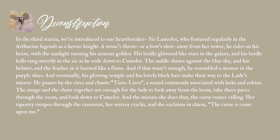In the third stanza, we are introduced to our heartbreaker, Sir Lancelot, who features regularly in the Arthurian legends as a heroic knight. A stone's throw or a bow shot away from her tower, he rides on his horse with the sunlight turning his armour golden. His bridle glittered like stars in the galaxy and his bridle bells rang merrily in the air as he rode down to Camelot. The saddle shines against the blue sky and his helmet and the feather in it burned like a flame. He resembled a meteor in the purple skies, and eventually his glowing temples and his lovely black hair make their way to the lady's mirror. He pauses by the river, chanting "Tirra Lirra" — a sound commonly associated with larks and robins — and the image and the chant together are enough for the lady to look away from the loom, take three paces through the room, and look down to Camelot.